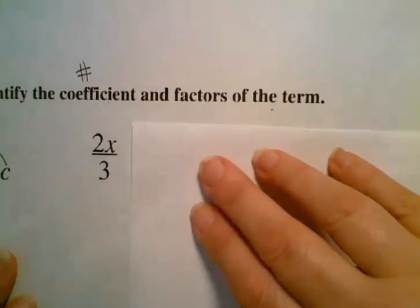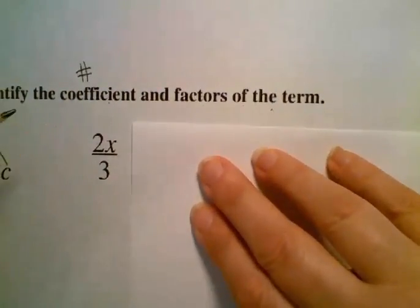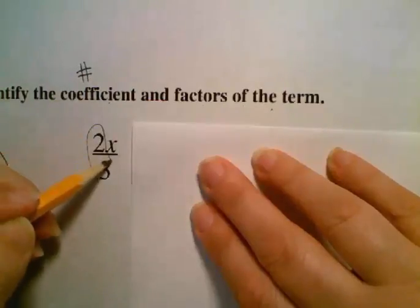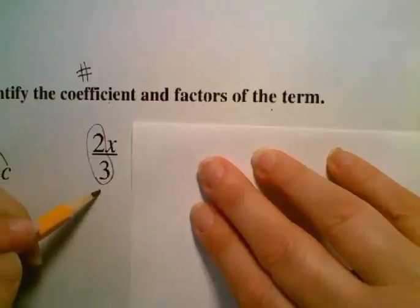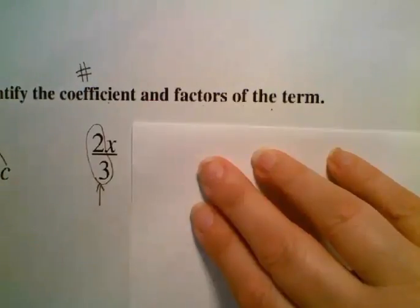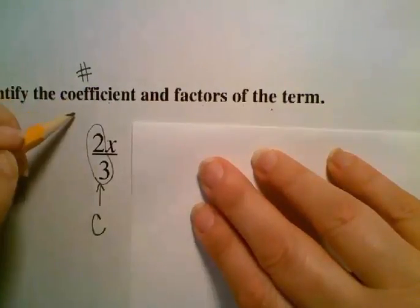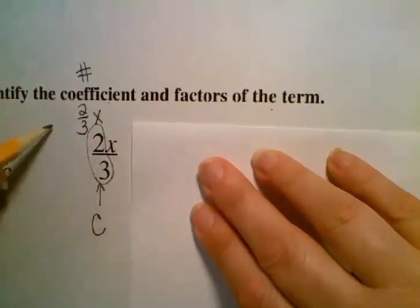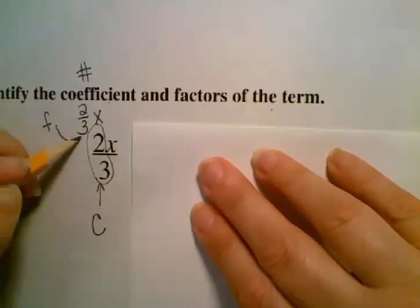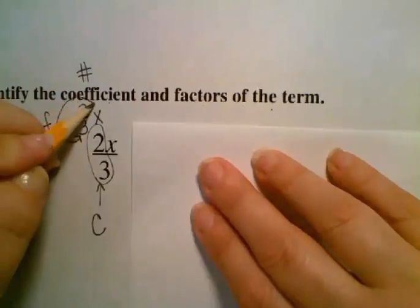Now let's look here. Our coefficient, remember, is the number portion. Our coefficient here is 2 thirds. So 2 thirds is our coefficient. We have 2 factors here. Our 2 factors would be 2 thirds and x. So we have our 2 factors, 2 thirds and x.